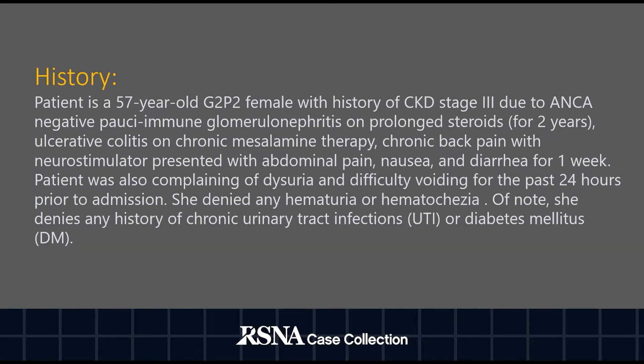The patient is a 57-year-old T2P2 female with a history of chronic kidney disease stage 3 due to ANCA-negative pauci-immune glomerulonephritis, on prolonged steroids, ulcerative colitis on chronic mesalamine therapy, and chronic back pain with neurostimulator, presented with abdominal pain, nausea, and diarrhea for one week.